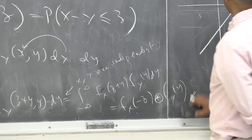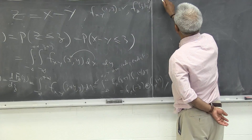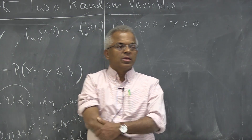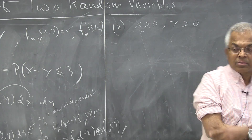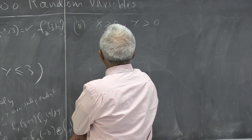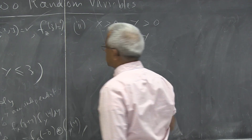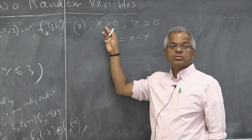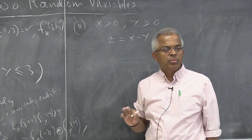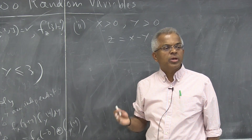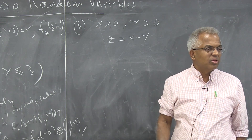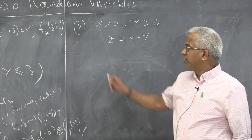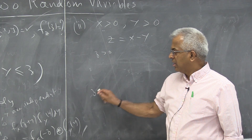Let me do one more interesting case. Suppose, as before, X and Y are non-negative random variables. So Z = X minus Y. Remember, even if X and Y are non-negative, Z could be positive or negative — unlike Z = X plus Y, which is always positive. So we have to consider two cases: z positive and z negative.